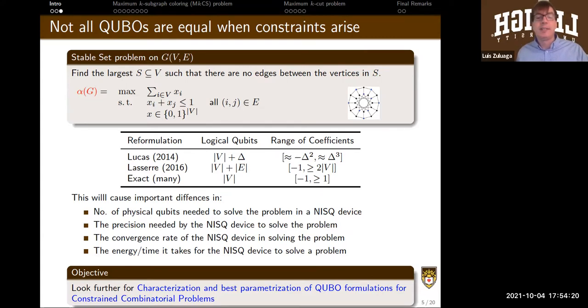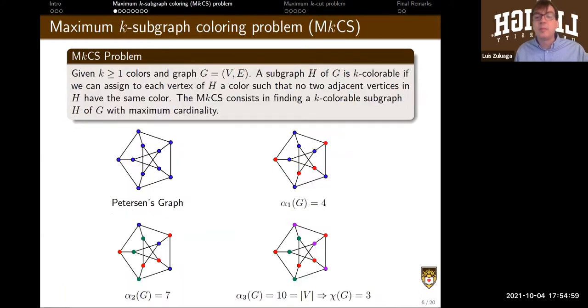So of course, all these characteristics, number of qubits, the coefficients can affect the convergence rate of the quantum algorithm of the quantum machine, the annealing time it takes to solve the problem, the precision that is required to solve the problem. So it's not surprising that now many authors are not just coming up with a QUBO formulation for a problem, but actually looking for what is the best QUBO formulation for a given constrained combinatorial optimization problem. And that's what here we have been working on.